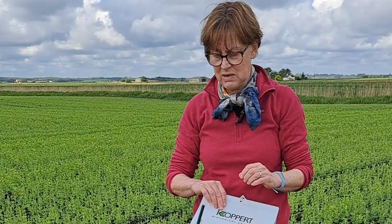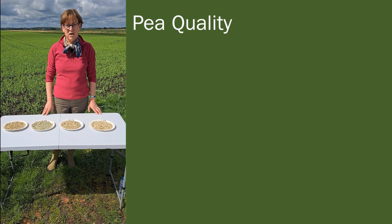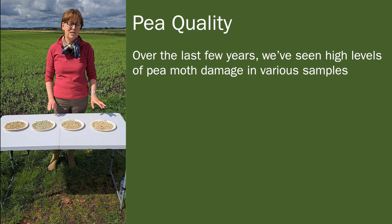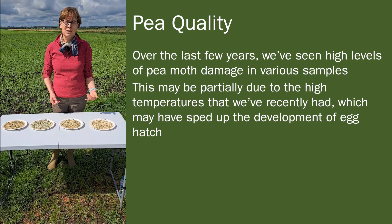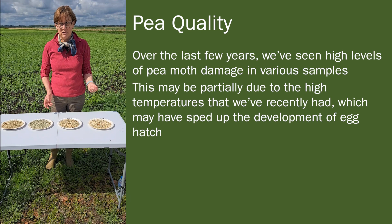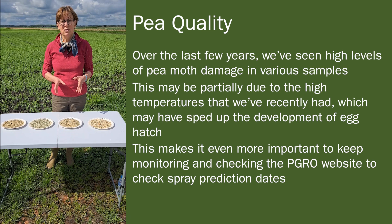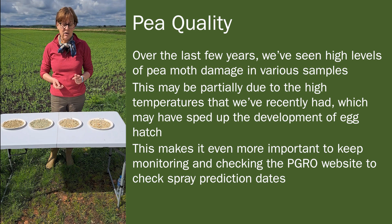Pea moths are small — a silvery-brown colour with tiny white markings on the tips of the wings, probably less than a centimetre long. Over the last couple of years, we've seen quite high levels of pea moth damage in traded samples at times. This might be partly due to the very high temperatures in that period of activity, which may have speeded up egg hatch and caught people out in terms of management. That's when it becomes really important that you're monitoring and checking the PGRO website for spray prediction dates for your area.